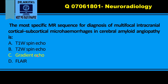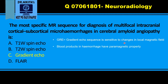Basically, there are two types of MR sequences: spin echo and gradient echo. Gradient echo is the one which is good for hemorrhages. GRE, as it is called, is a gradient echo sequence. It is sensitive to changes in local magnetic field. Blood products in hemorrhage have paramagnetic property, meaning they cause change in the local magnetic field.